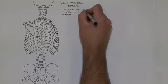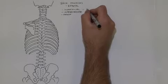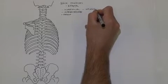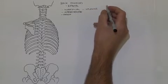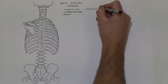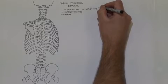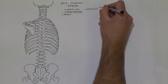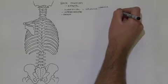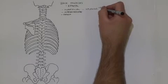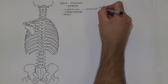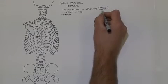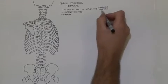In the superficial group we're going to look at muscles called the splenius group. They are broken into two categories: splenius cervicis, meaning they attach to the cervical vertebrae, and splenius capitis — if you think about wearing a cap, capitis means of the head.